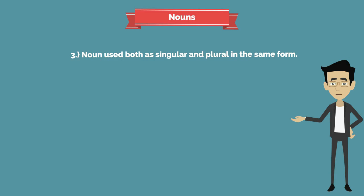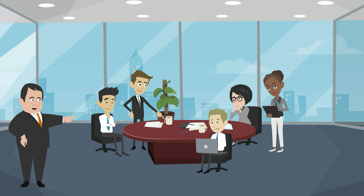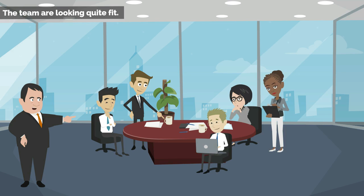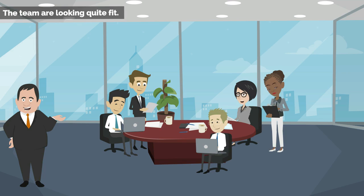Second group: collective nouns such as jury, public, team, audience, committee, government, congregation, orchestra can be used as both singular and plural. Examples: 'The team are looking quite fit.' 'The team has not turned up yet.'